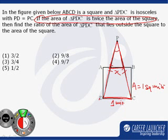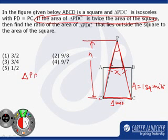That means if h is the height, area of triangle PDC is equal to half into h into 1 is equal to 2 units.